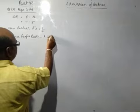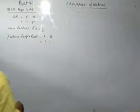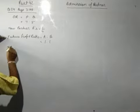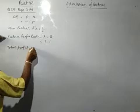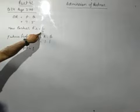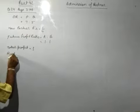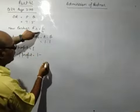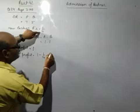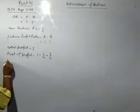That is 1 is to 1. Now this is pattern number 5. Here future profit ratio is given, so we will consider total profit equal to 1, new partner ratio 1 by 4, so rest of profit 1 minus new partner ratio 1 by 4 that is 3 by 4.